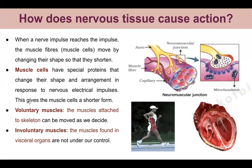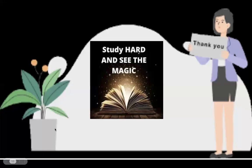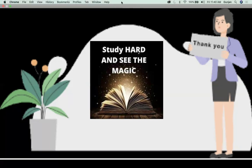To recap: the forebrain is the main region of the brain, containing the cerebrum. Then there is the midbrain, then the hindbrain - which includes the medulla oblongata and cerebellum - controlling involuntary and voluntary actions respectively. I hope this is all clear. If you like this video, please come back to this channel, press the like button, and share this video with your friends. Thank you so much, study hard and you will see the magic happen in your life. Bye bye, take care, have a nice day.